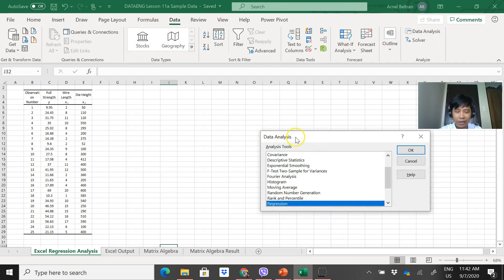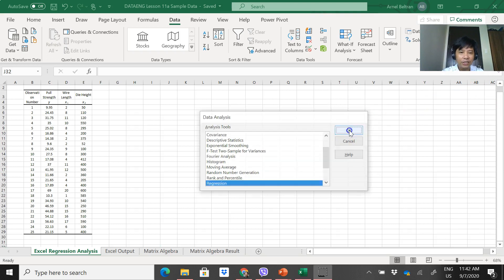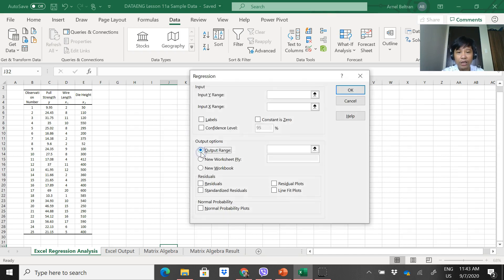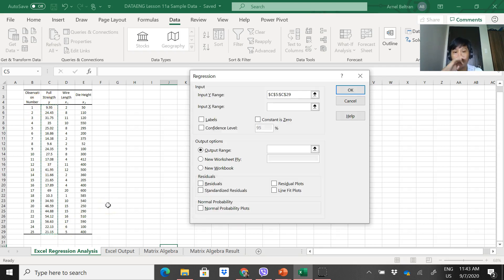When you click regression, the regression tab appears. When there's nothing done yet, it has no content. I usually use the output range. Let's go to input. Input range. This one is Y, input Y range. First one, you need to input the Y. Fill in all the data for Y. That will be C5 to C29. Then input X range. For the X range, in lesson 10, you only input one column for X. For this one, two columns na. So you get the two columns of your X. Get all. Excel will recognize that there are two variables.